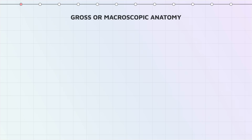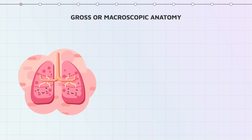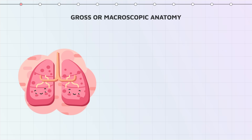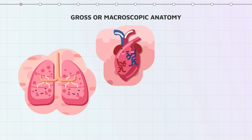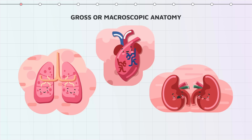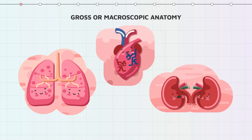Gross or macroscopic anatomy is the study of large body structures visible to the naked eye, such as the heart, lungs, or kidneys.